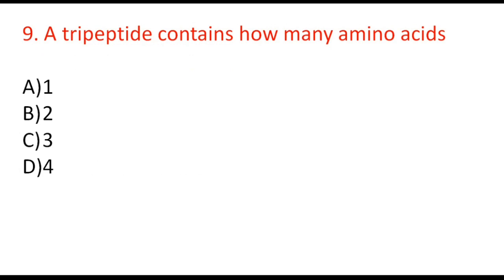Next question: a tripeptide contains how many amino acids? For 3 peptide bonds we need 4 amino acids, so the correct option is D, 4.